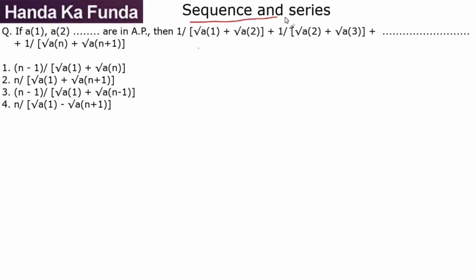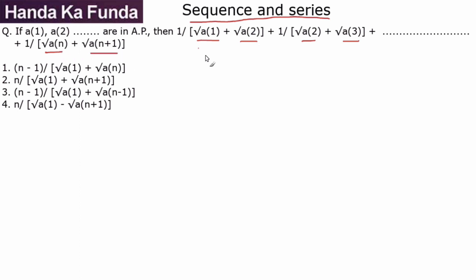Welcome to another question on sequences and series. In this question, we are given terms a1, a2, a3 in an AP, and we need to find the sum of the series: 1/(√a1 + √a2) + 1/(√a2 + √a3) + ... + 1/(√an + √a(n+1)). Let's look at each term one by one.